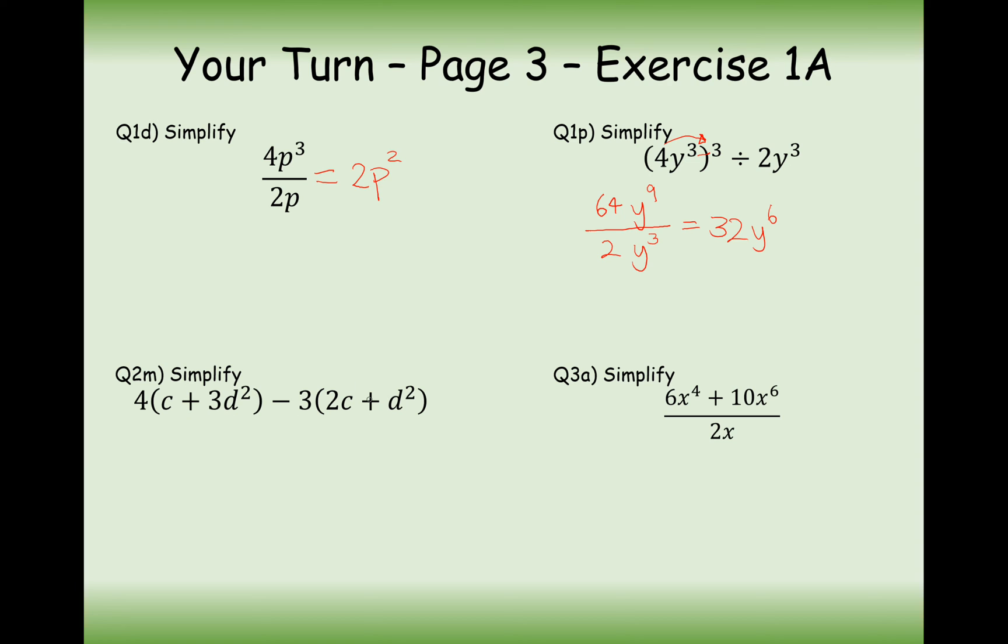I've included one of these expanding brackets one to see if you've been caught out by this negative here. So let's expand the first term. So 4c plus 12d squared. And now we're going to take away everything from this right-hand expression. So that's going to be take away 6c and take away 3d squared. Let's now simplify what we've got here. We've got 4c and negative 6c. So that's minus 2c. And 12d squared take away 3d squared. That's plus 9d squared.